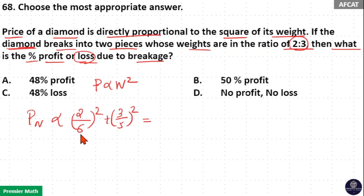Here, 4 by 25 plus 9 by 25 equals 13 by 25, which means that 25 parts is the old weight and 13 parts is the new weight, the current weight.